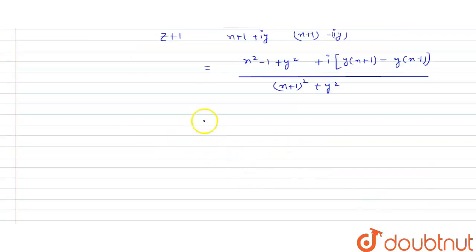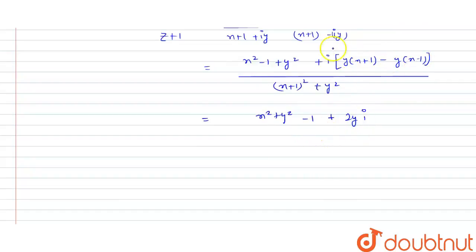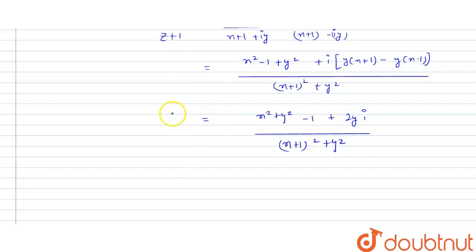After simplification, the real part comes out to be x squared plus y squared minus 1, and the imaginary part simplifies to 2y (since the x terms cancel). So the expression equals (x squared plus y squared minus 1 plus 2yi) divided by (x plus 1) squared plus y squared. This is the value of our complex number Z.